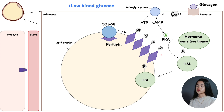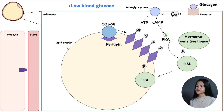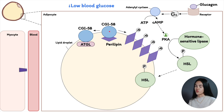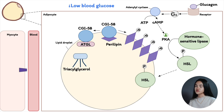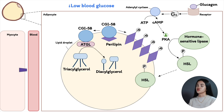Lipid droplets have perilipins on the surface — they are proteins I think of as security gates of lipid droplets, preventing lipids from being mobilized unless required. When perilipins are phosphorylated, the protein CGI-58 that binds to perilipins breaks away. When it does that, it triggers acylglycerol lipase (ATGL) to stimulate lipase activity. What acylglycerol lipase does is it converts triacylglycerol to diacylglycerol.